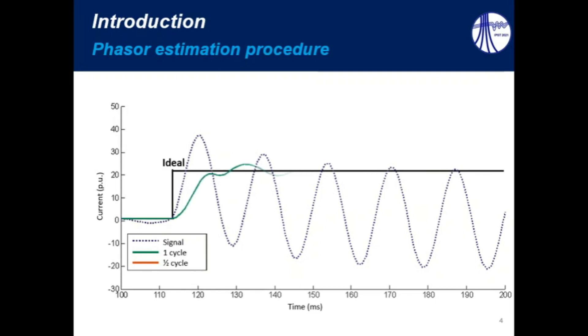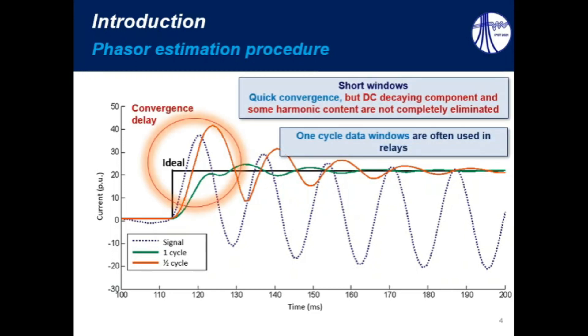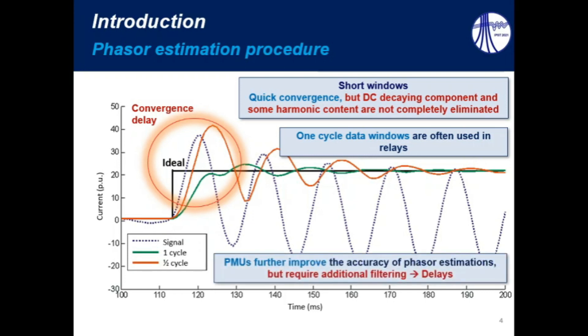However, in real life, when we apply different algorithms, which use one-cycle data or half-cycle data, we can see that the transient response is different for each algorithm. Regarding the convergence delay, we can see that when we use short windows, a quick convergence is verified, but the decaying components and some harmonic content are not completely eliminated. Thereby, one-cycle data windows are often used in protective relays, but we know also that PMUs further improve these algorithms, providing even more accurate phasor estimation.